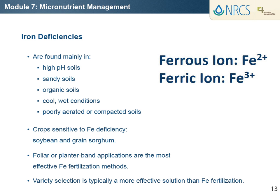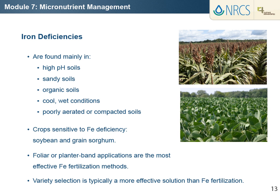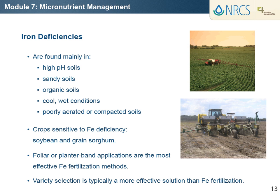Plant roots take up iron as the ferrous and ferric ions, and as a component of organic complexes of low molecular weight. Plant species vary significantly in their sensitivity to low iron supply. Sensitive crops include soybean and grain sorghum. Due to soil interaction that greatly reduces iron solubility and plant availability, foliar or planter band applications are often the most effective iron fertilization methods. However, research has shown that variety selection is typically a more effective solution than iron fertilization.